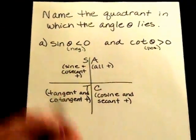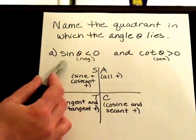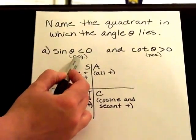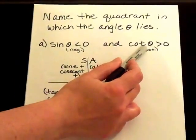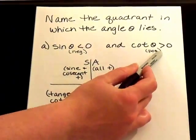We're going to name the quadrant in which an angle lies. So here we're told that the sine is a negative angle, and the cotangent of theta is a positive angle.